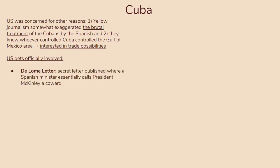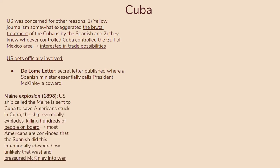The US finally gets involved with the publication of the DeLome letter — a secret letter in which a Spanish minister calls President McKinley a coward, saying they can torment the Cubans and the US doesn't have the guts to stop them. This touched American ego. They then acted immediately following the Maine explosion in 1898, where a US ship sent to Cuba exploded suddenly, killing hundreds on board. Most Americans were convinced the Spanish did it intentionally, despite how unlikely that was, and used it to pressure McKinley into war.